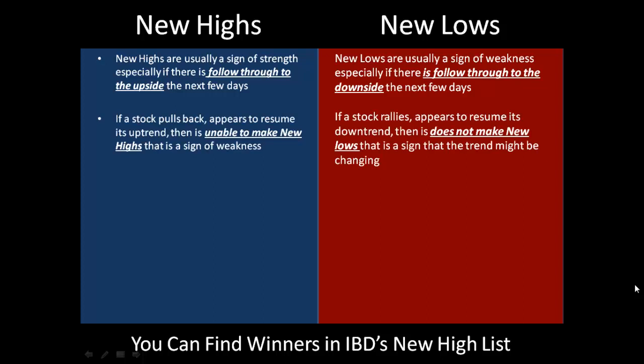In an uptrend, if a stock has a pullback and then appears to resume its uptrend but then is unable to make a new high, that's a sign of weakness — you need to see follow-through on new highs to the upside. If a stock is making new lows, then tries to rally and appears to resume its downtrend but then doesn't make a new low, that's a sign that the trend might be changing.